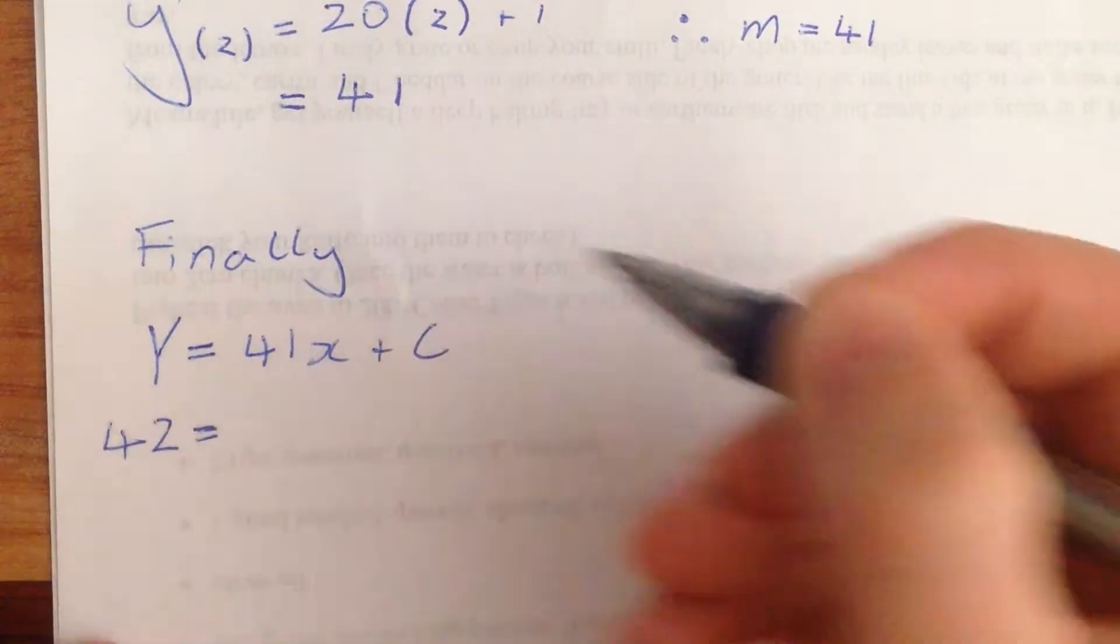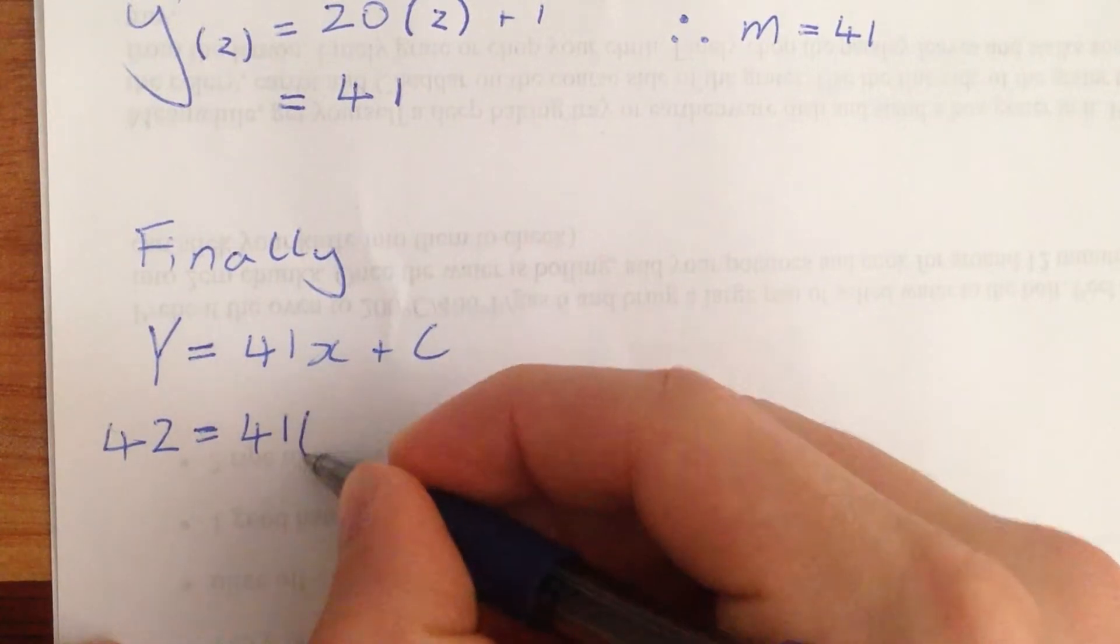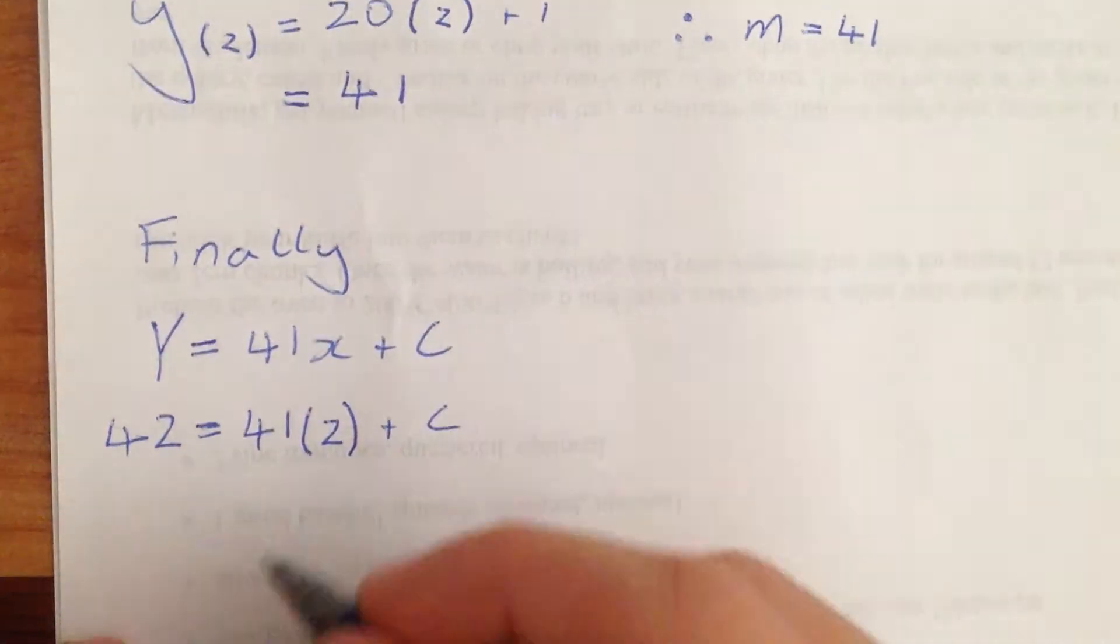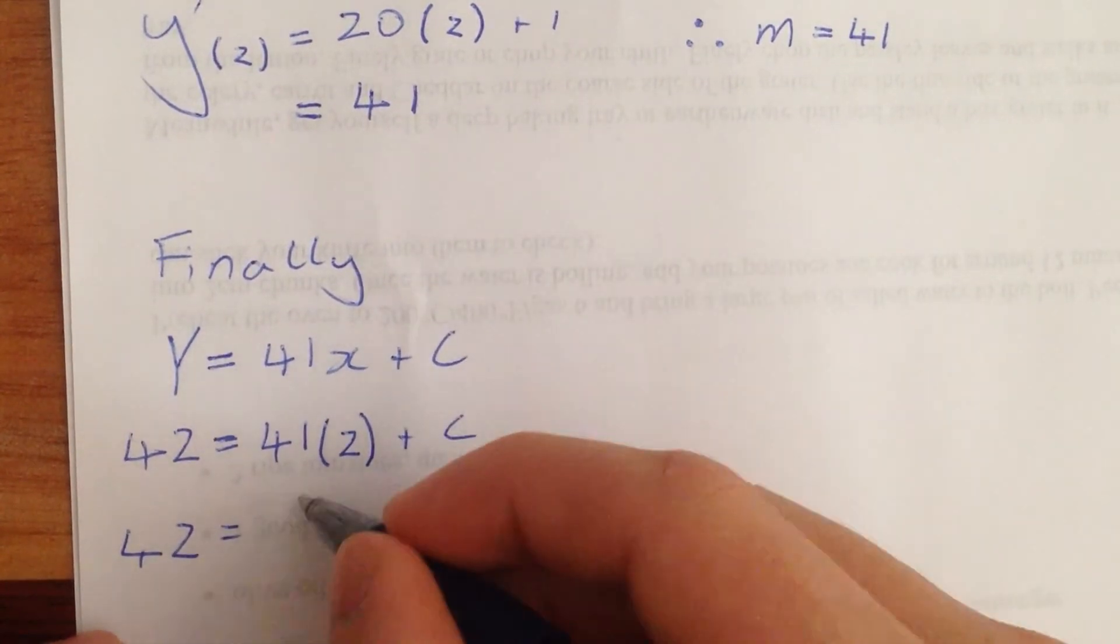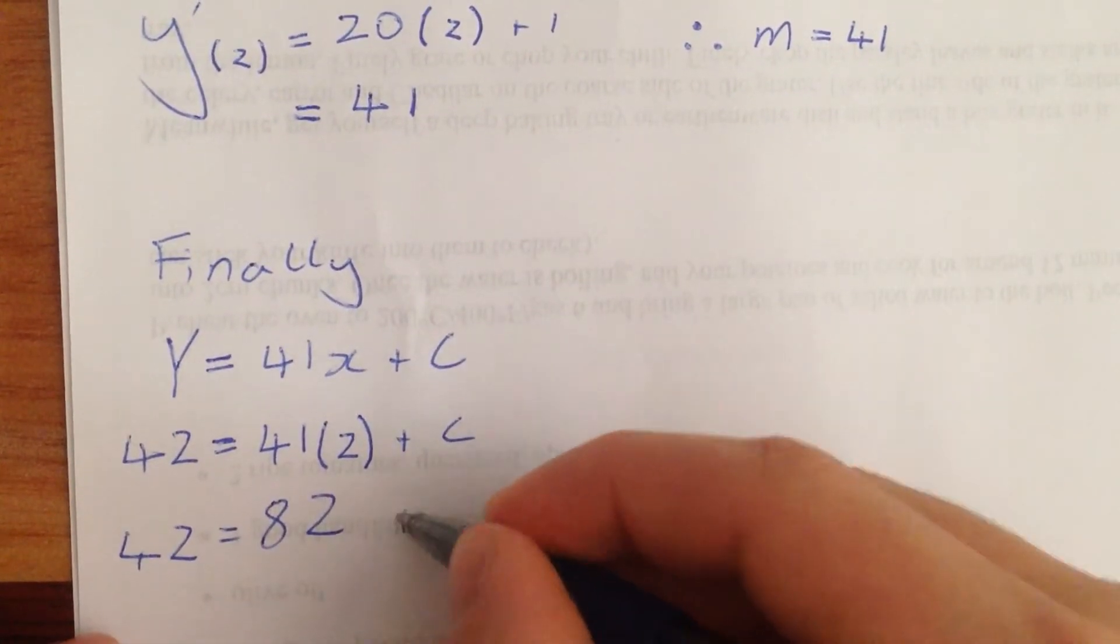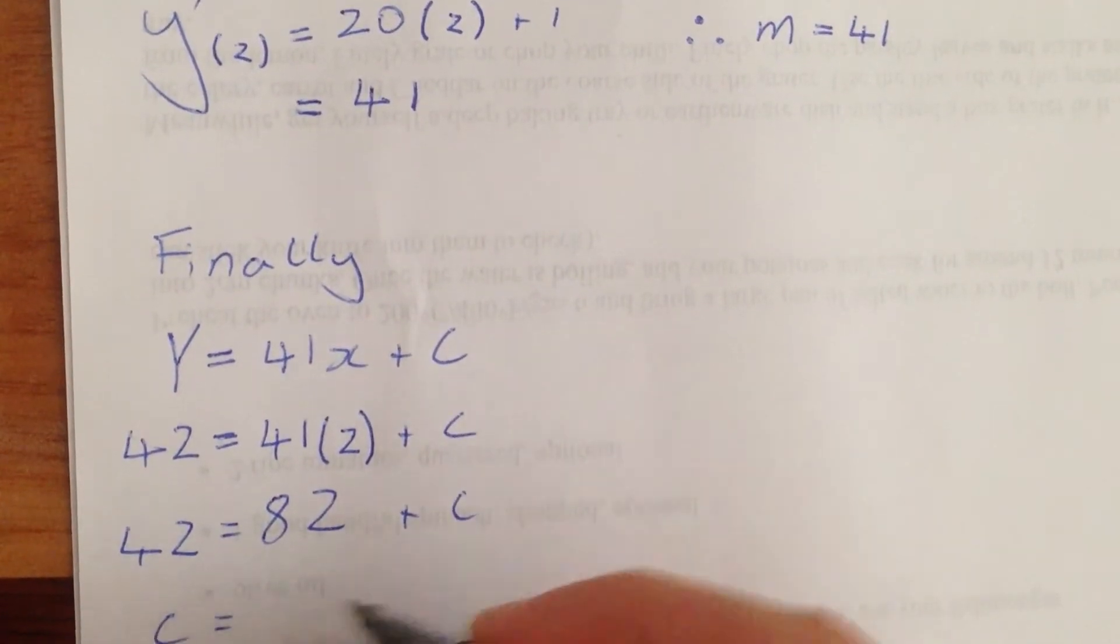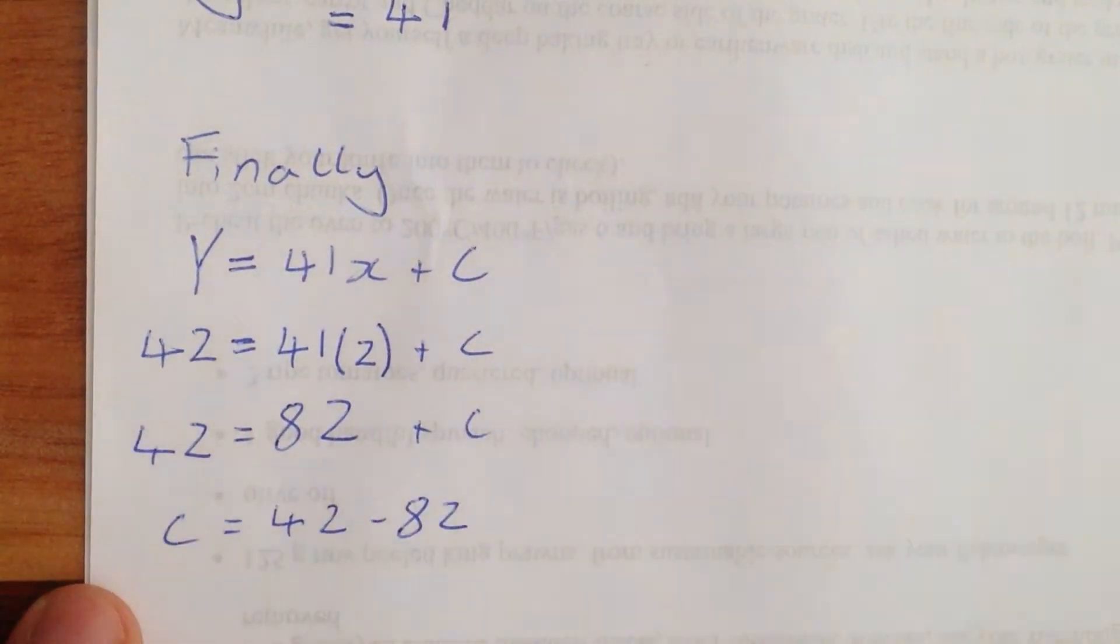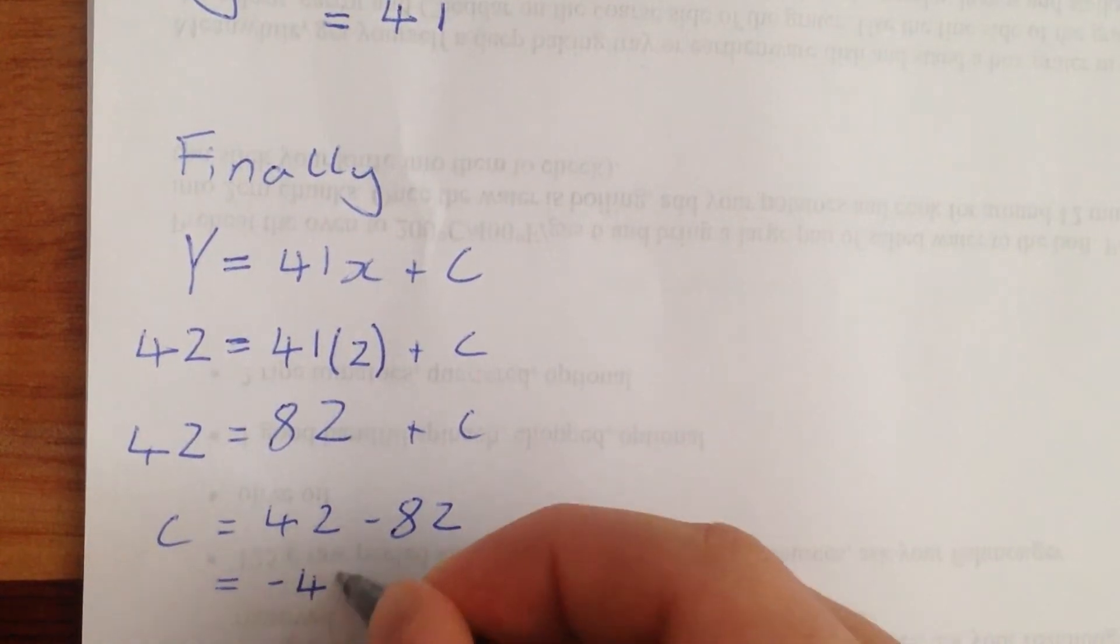42 equals 41 times 2 plus c. So that's 42 equals 82 plus c. c equals 42 take 82. What's that? Negative 40 I think. Yeah, negative 40.